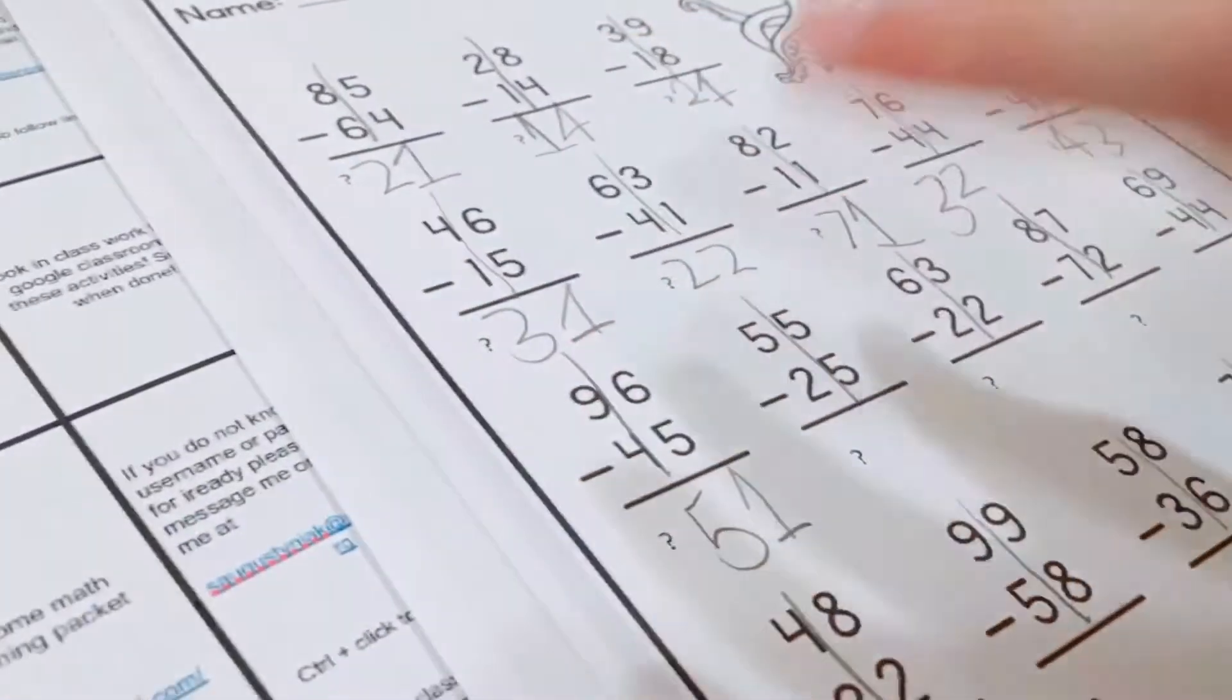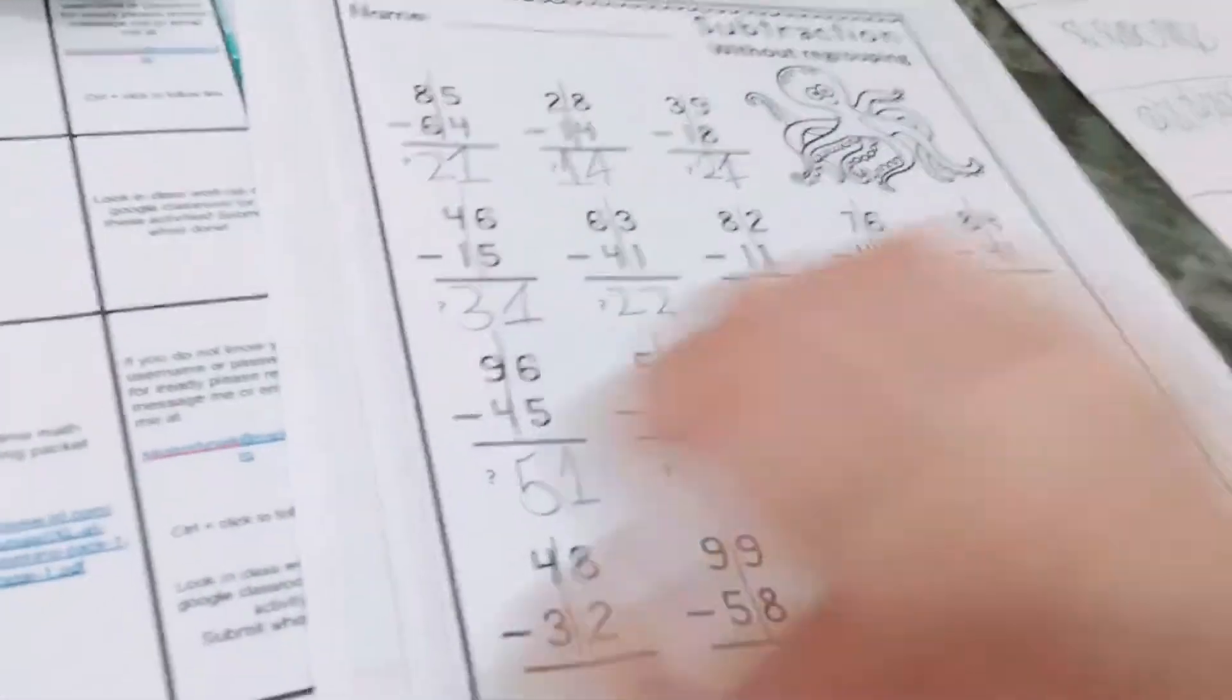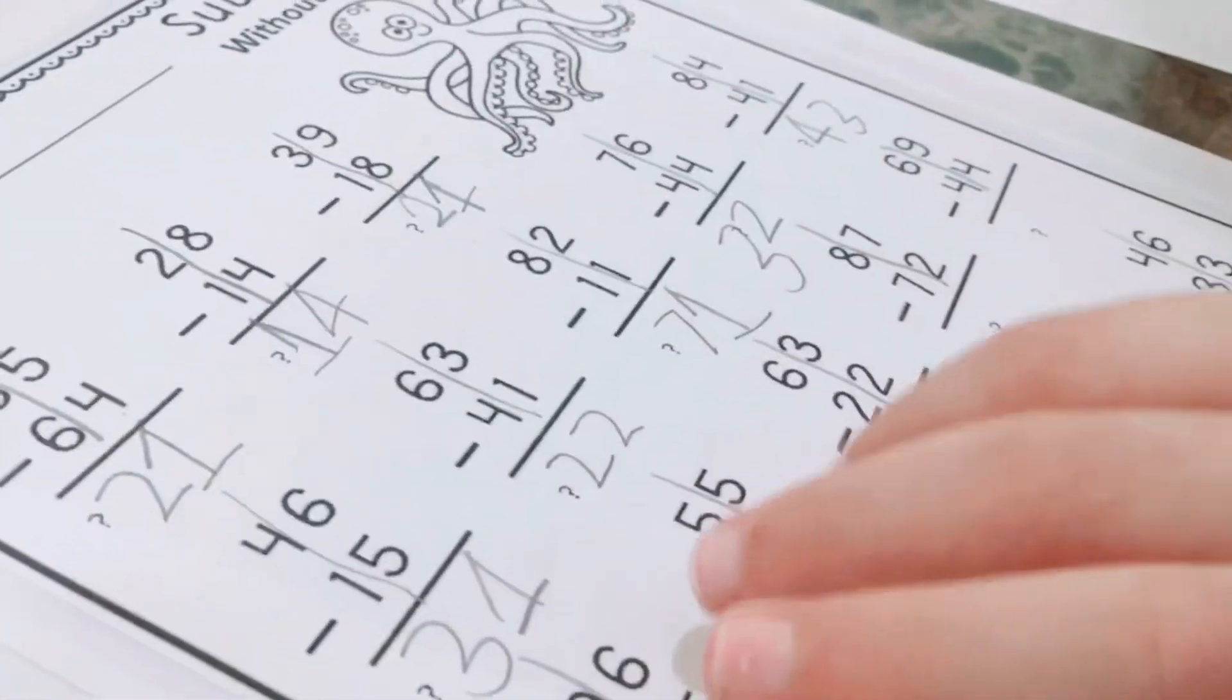I'm going to tell you that these are the ones and these are the tens. Which one is the ones? You can't see? Wait, here, these are the ones, okay.